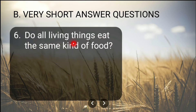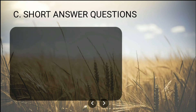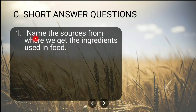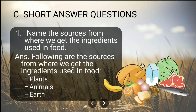Sixth question: Do all living things eat the same kind of food? No, all living things do not eat the same kind of food. Moving to short answers, question one: Name the sources from where we get the ingredients used in food. The three sources are plants, animals, and earth.